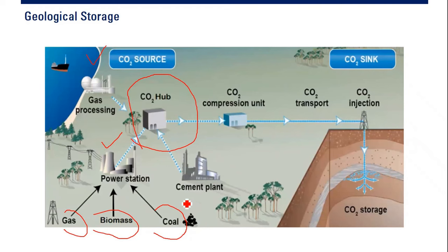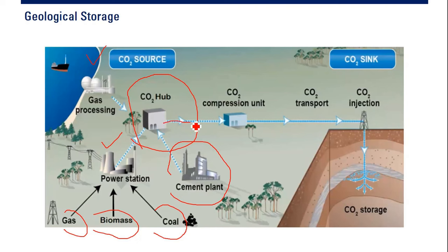Also, cement plants produce CO2 here. So all the CO2 will be collected in the CO2 hub, and it will be delivered to the CO2 compression unit.